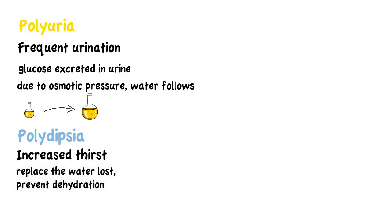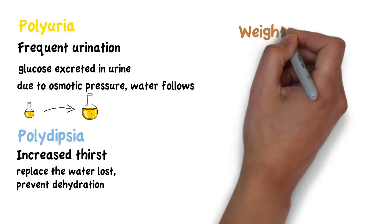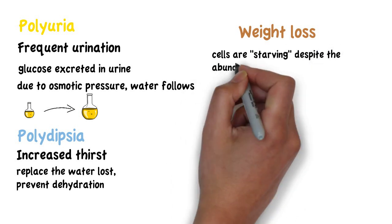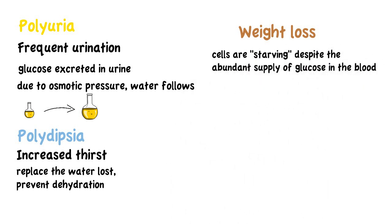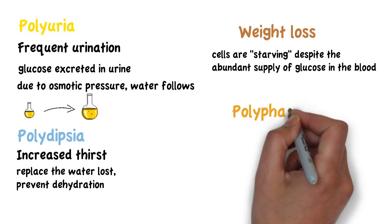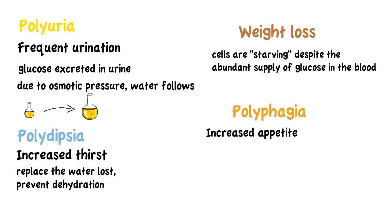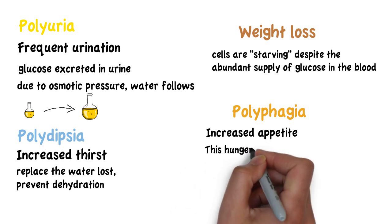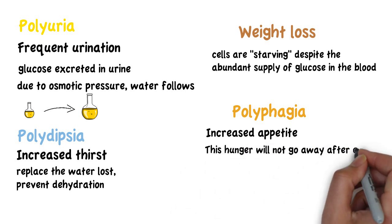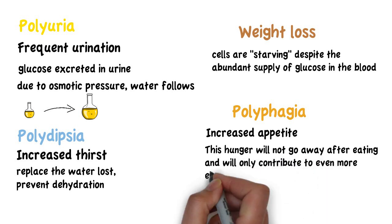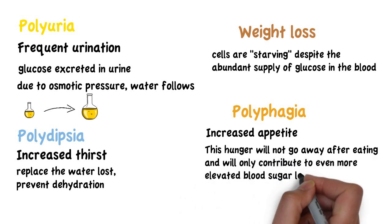Moreover, due to the inability of cells to take in glucose, the patient loses weight as the cells are starving, despite the abundant supply of glucose in the blood. Finally, patients present with polyphagia, which is increased appetite, since the cells are not getting glucose. This increased hunger, however, will not go away after eating, and will only contribute to even more elevated blood sugar levels.